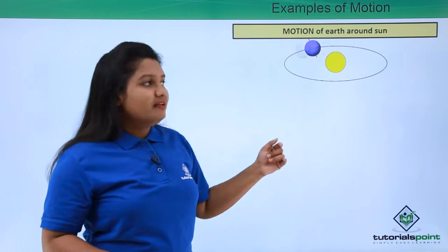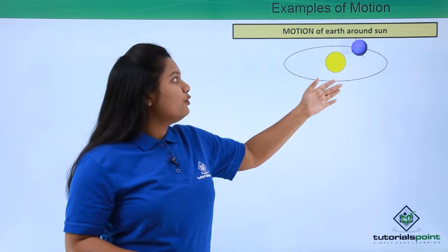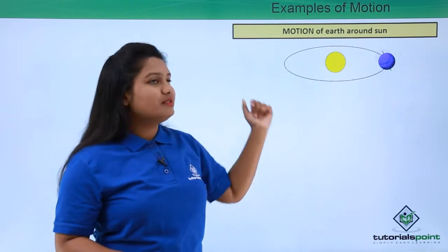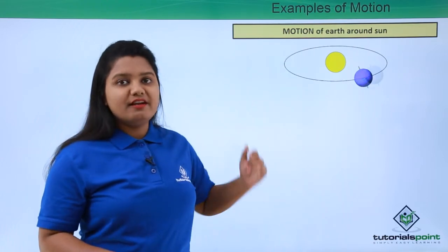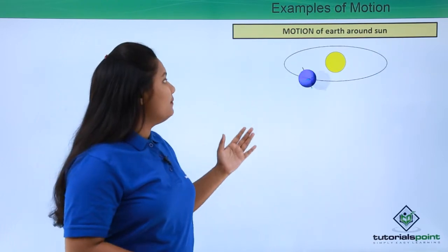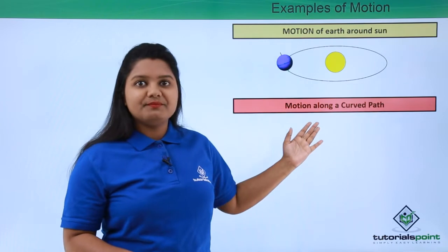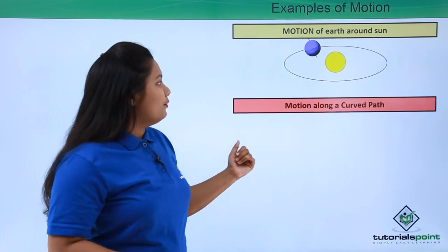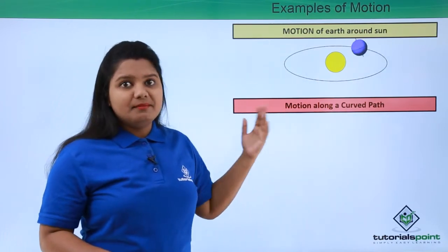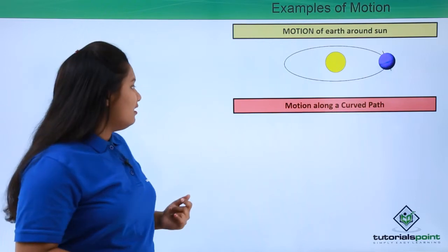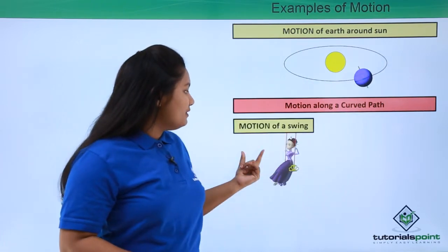On the other hand, it looks something like an elliptical path. Now such a motion that earth makes around sun, we can call this kind of motion, motion is made in a curved path. Now let me give you some other examples. Now the motion of a swing.